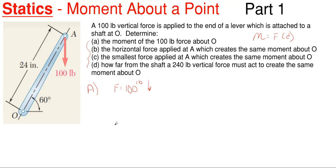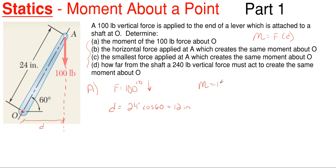Since the force is vertical, our distance D must be horizontal. The 100-pound force acts through that line of action, and the horizontal distance goes over to point O. We are told the lever is 24 inches long at 60 degrees off the horizontal, so D equals 24 inches times cosine of 60, which is 12 inches. Therefore, the moment about point O equals 100 pounds times 12 inches, giving 1,200 pound-inches. Keep in mind moment units are force times distance — pound-inches or inch-pounds, they are the same thing.